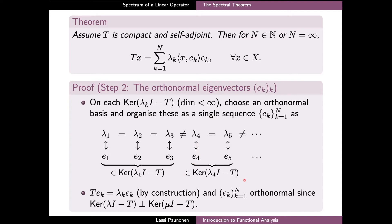By construction, for each k the vector e_k belongs to the kernel of (λ_k I − T), and therefore e_k is indeed an eigenvector corresponding to λ_k. Since we chose the vectors e_k from orthonormal bases of the kernels, these vectors are normalized and orthogonal with respect to all other basis vectors of the same kernel. Furthermore, since T is self-adjoint, eigenvectors corresponding to distinct eigenvalues are always orthogonal, and so the full set of vectors e_k is orthonormal.